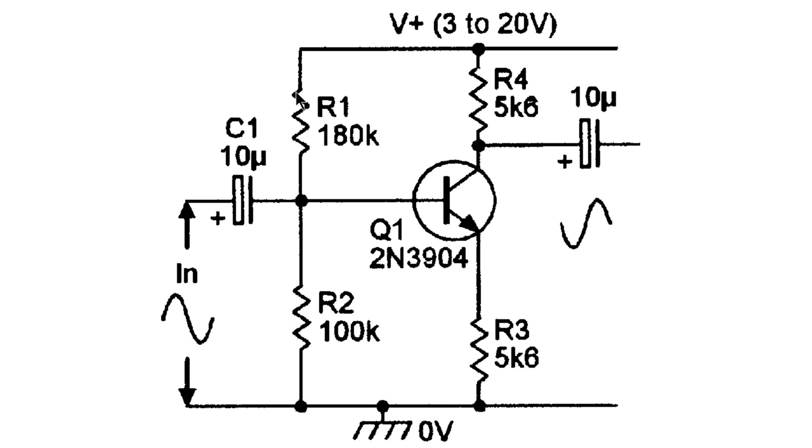The base is biased by these two resistors. The power can be anything between 3 volts to 20 volts. We're using a PP3 battery, which is 9 volts, so it's fine.